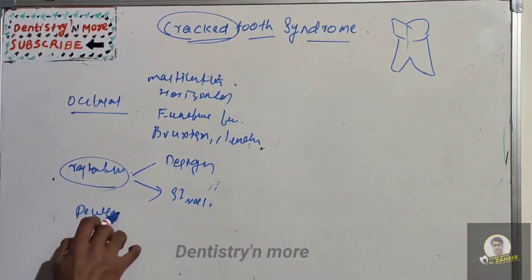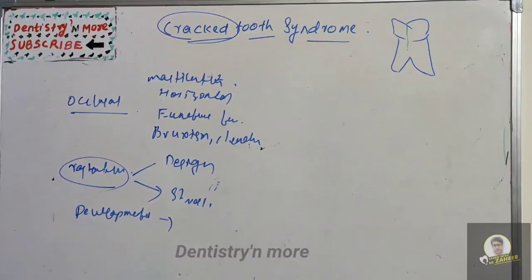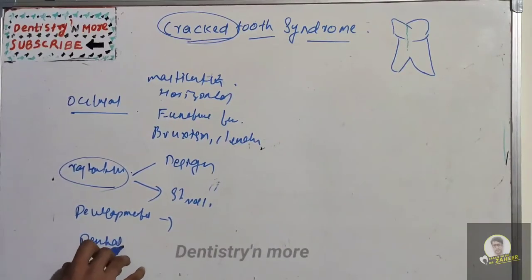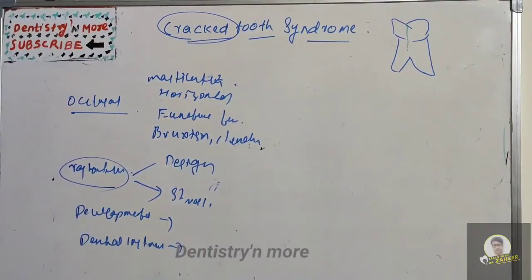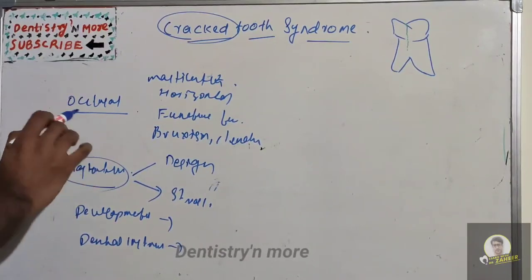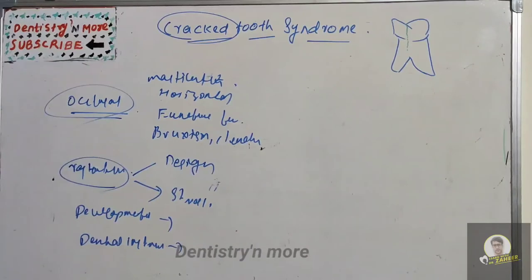Additional etiologies include developmental reasons such as incomplete fusion of areas of calcification, and dental instruments — for example, when using high-speed handpieces, there can be cracking and crazing on the tooth. So the etiology falls under four categories: occlusal forces, restorative procedures, developmental reasons, and dental instruments.